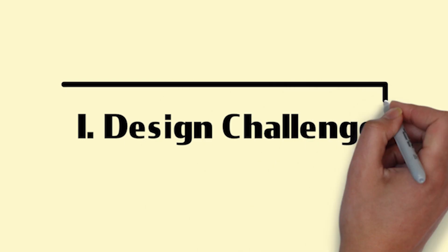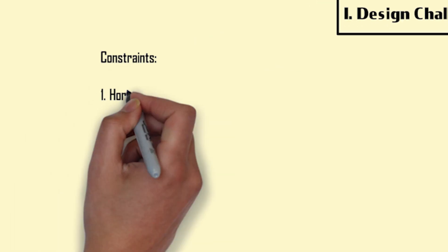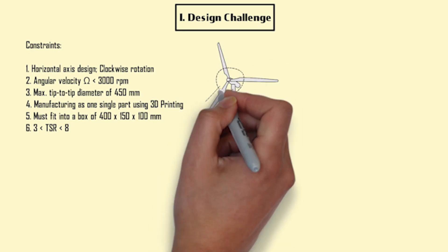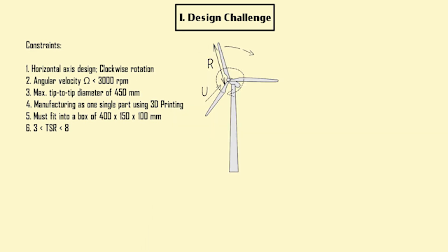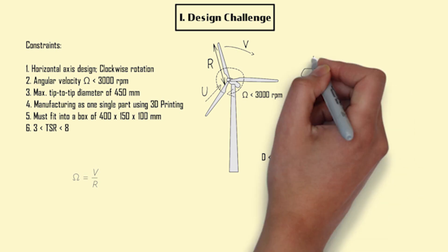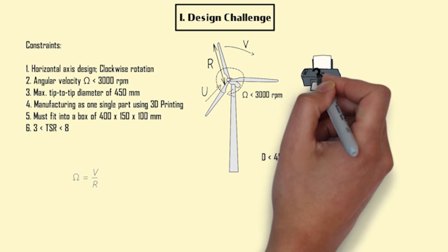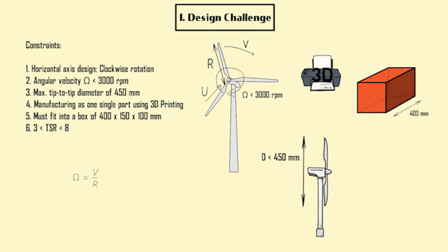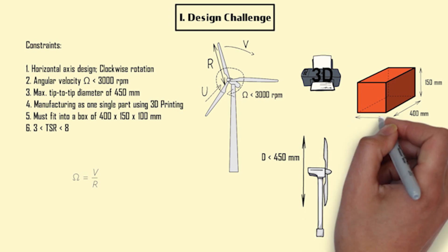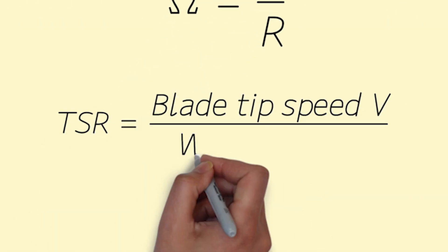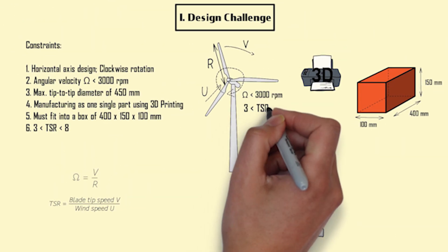Alright, enough Hans Zimmer music, let's get started. The design challenge is subject to the following constraints. The turbine should have a horizontal axis design and rotate clockwise with a maximum angular velocity of 3000 rpm. The turbine must have a maximum tip to tip diameter of no greater than 450 mm and must be manufactured as one single part using 3D printing with ABS plastic. It must fit into a box of dimensions 400 x 150 x 100 mm and its tip speed ratio defined as the ratio of blade tip speed to wind speed should be between 3 and 8.